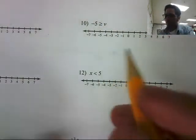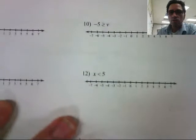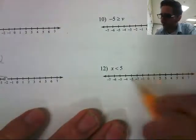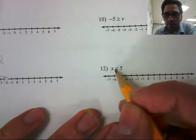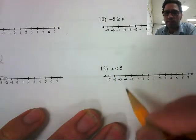All right, number 12. Okay, this time our variable is already on the left-hand side, so we don't need to rewrite anything. This reads, x or any number less than 5. This is a less than sign.